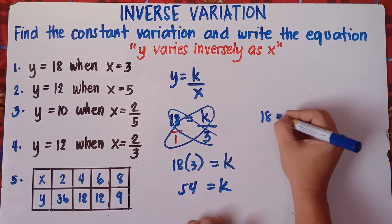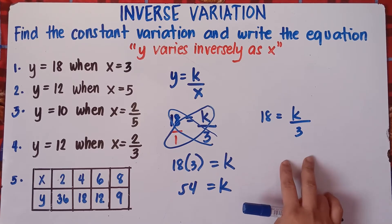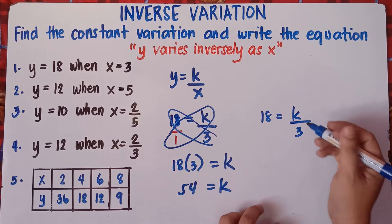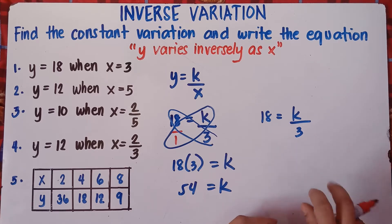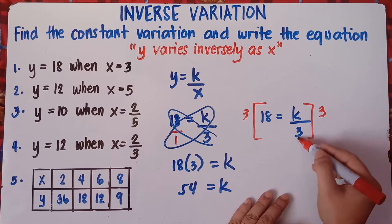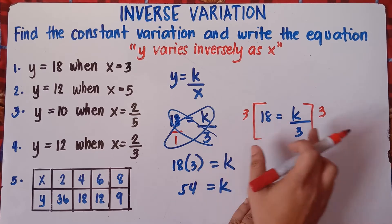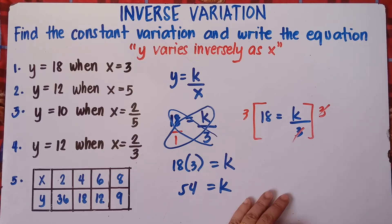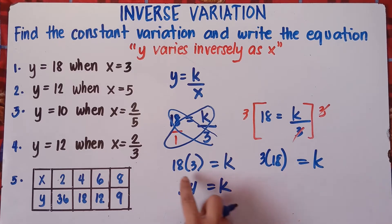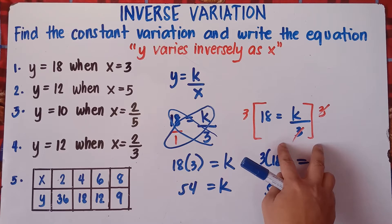You can also use the multiplication property of equality. If most students are confused with the properties of equality, go ahead and use cross multiplication. But with the other approach: to get rid of the 3, multiply both sides by 3. You can cancel the 3 on the right side, and on the left side you get 3 times 18 equals k — which also gives 54 equals k. So our k is 54 either way.